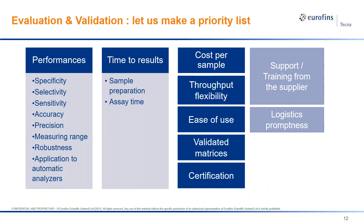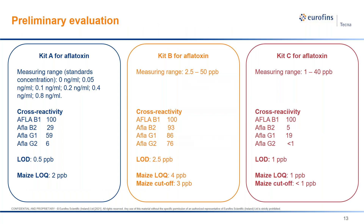On the contrary, large companies that do not have cost issues and have systematically high sample throughput may pay more attention to other aspects such as logistics, technical assistance and the worldwide presence of the supplier. There are different aspects to be rated, and there is no unique product that fits all needs around the world. It is important to have this in mind.